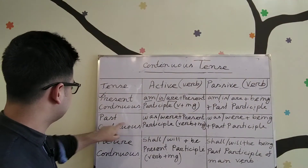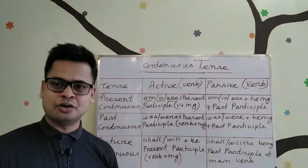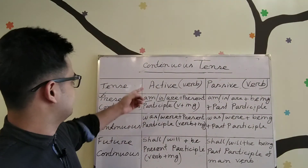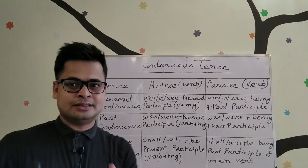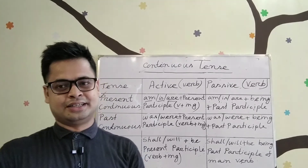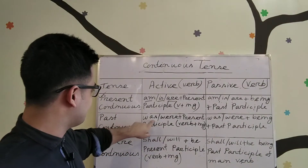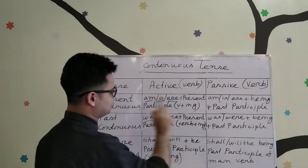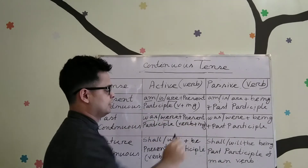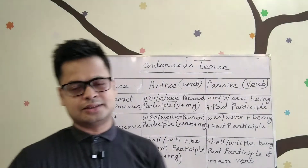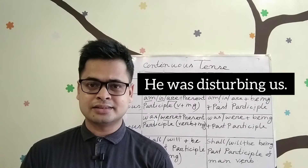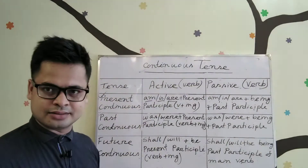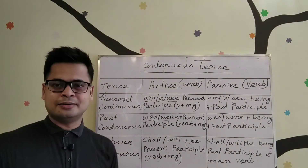Now let's talk about past continuous tense. In active voice, the structure is 'was/were' plus the present participle — that means the -ing form. For example: 'He was disturbing us.' 'Was disturbing' is the verb form used in an active sentence, especially in past continuous tense.